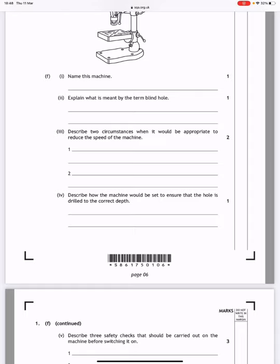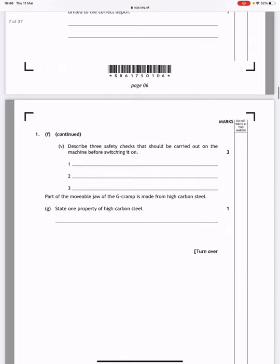Describe how the machine would be set to ensure that the hole is drilled to the correct depth. Well you would use the depth stock. Describe three safety checks that should be carried out on the machine before switching it on. You want to check that the drill is securely attached to the chuck, that the guard is in position, that you know where the emergency buttons are.